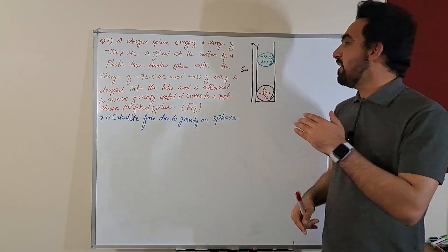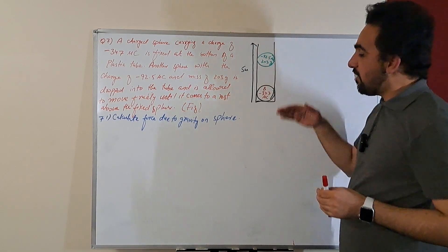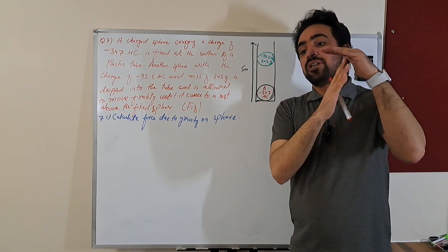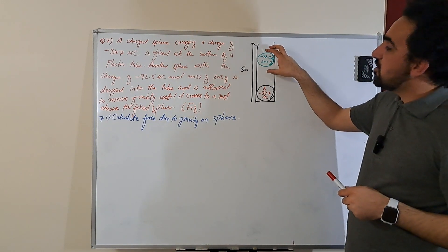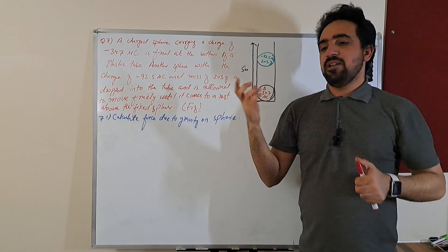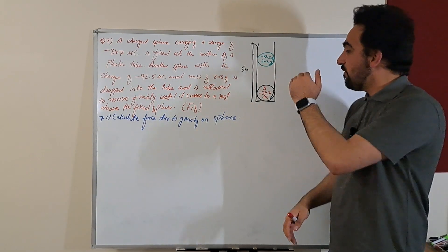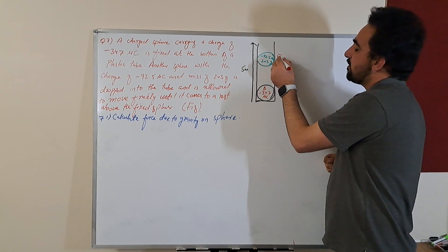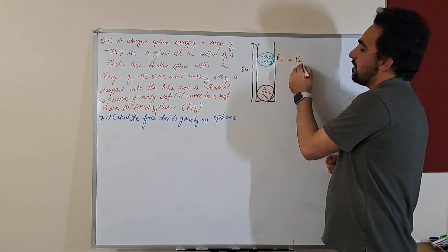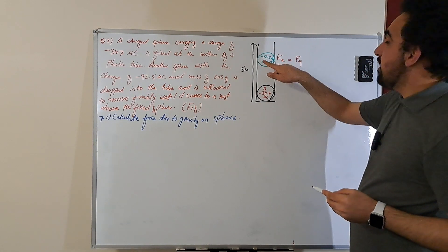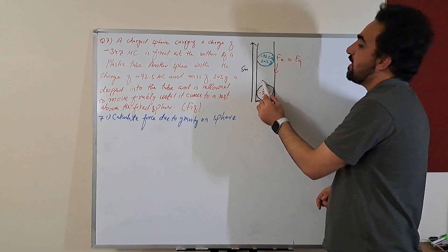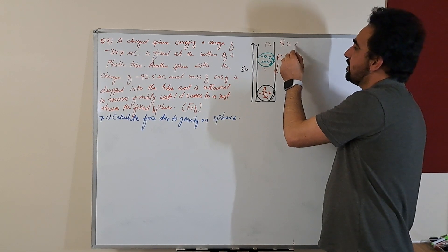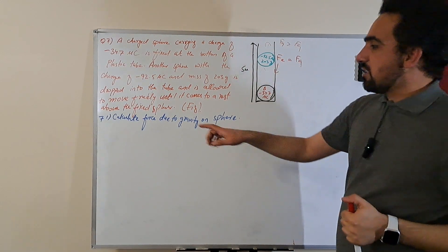Since both charges are negative, same charges repel each other. The dropped mass moves under the influence of gravitational force downward, while the electric force pushes it upward. A point is reached where the electric force equals the gravitational force and the sphere stabilizes in the air. If it moves down, electric force increases; if it moves up, gravity dominates — so it returns to equilibrium.